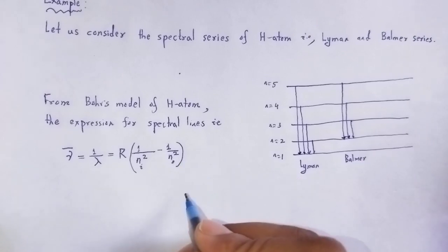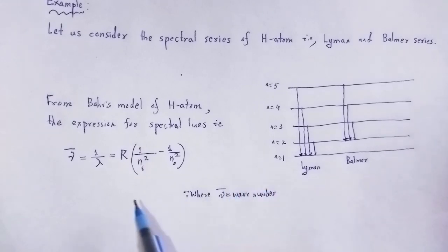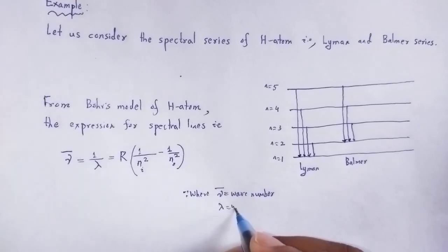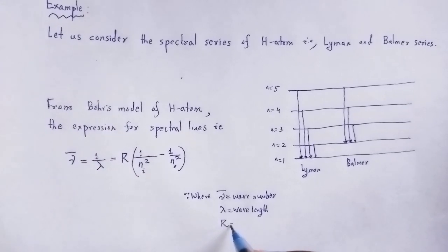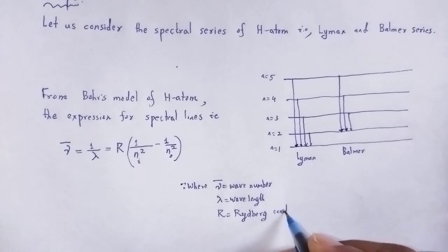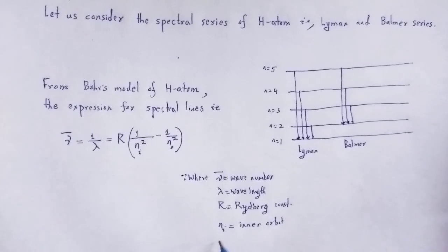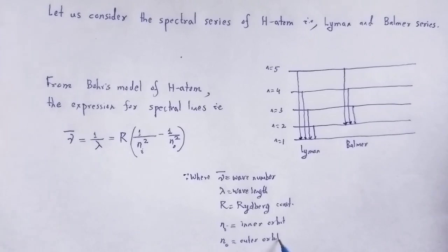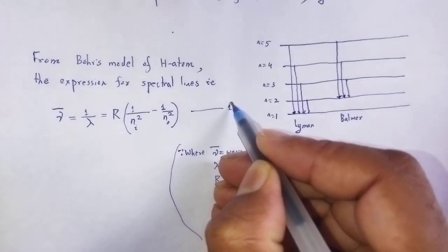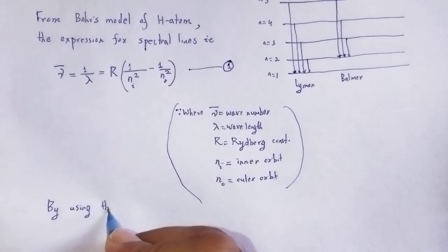Here, nu-bar is the wave number, lambda is the wavelength, R is the Rydberg constant, nᵢ is the quantum number for the inner orbit, and nₒ is the quantum number for the outer orbit. We will use this as equation number 1.